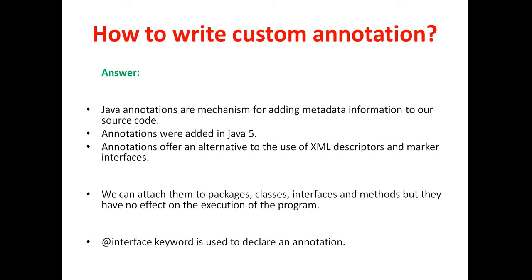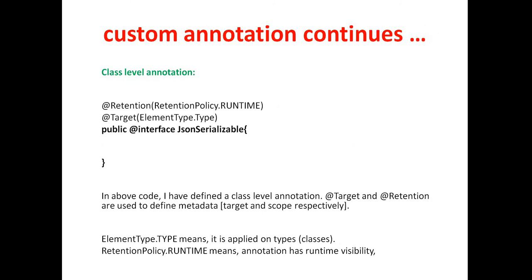The next question was: how to write custom annotations? This is a very important question. Java annotations are mechanisms for adding metadata information to our source code. Annotations were added in Java 5. They offer an alternative to the use of XML descriptors and marker interfaces. We can attach them to packages, classes, interfaces, and methods, but they have no effect on the execution of the program. The @interface keyword is used to declare an annotation. Annotations are of three types: class level annotation, method level annotation, and field level annotation.